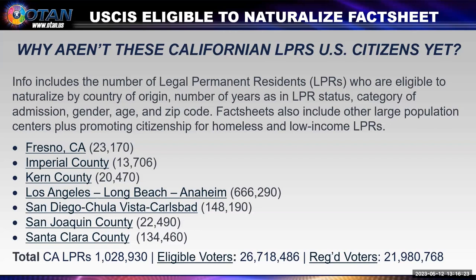One thing I really wanted to talk about, especially because of our adult education programs — our school has not recovered yet from the drop in student enrollment from COVID-19 — is the USCIS eligible-to-naturalize fact sheets. This is two pages of really nice PDFs showing the number of legal permanent residents eligible to naturalize by country of origin. These are people who should be in our citizenship classes. The data includes years of LPR status — a lot of them are past the five-year mark — category of admission, gender, age, and zip code.